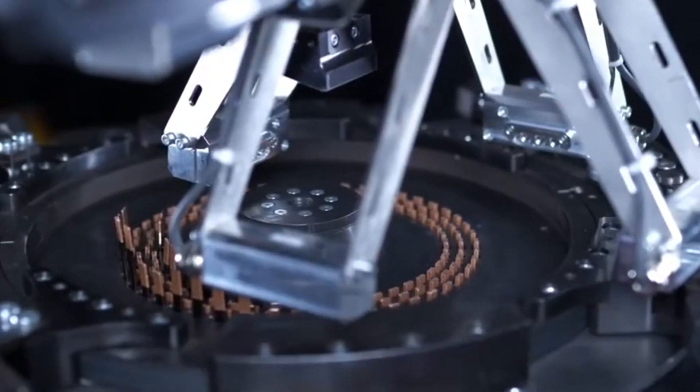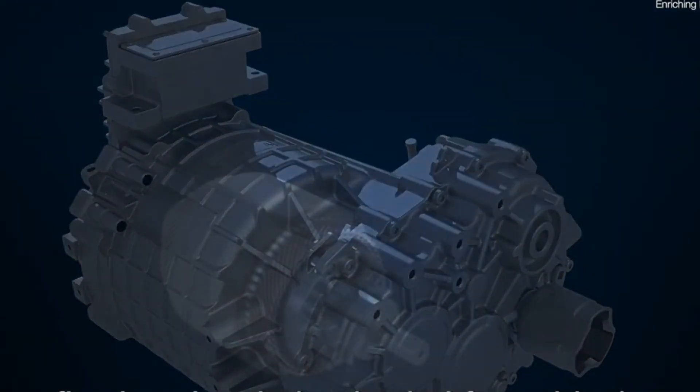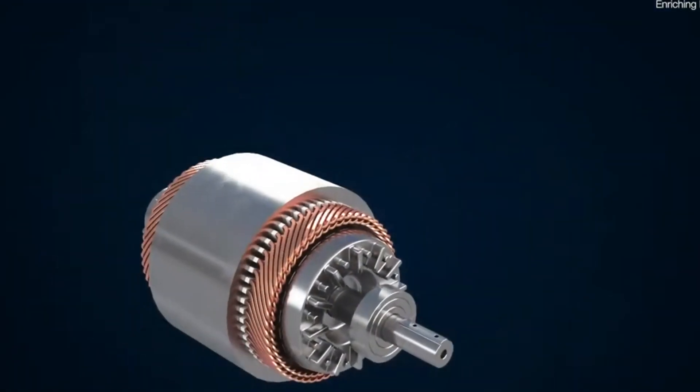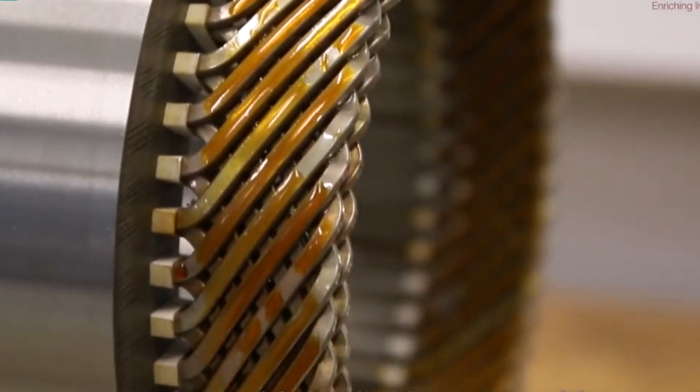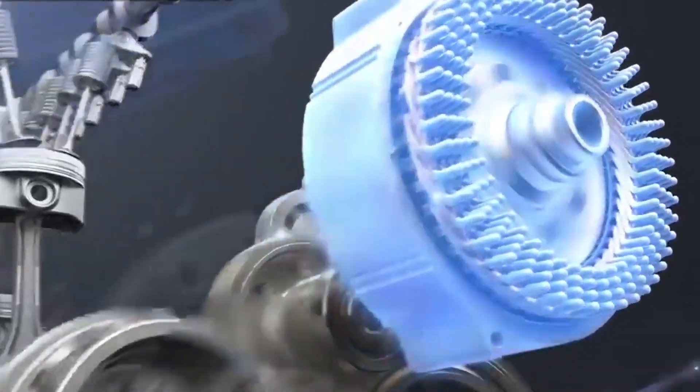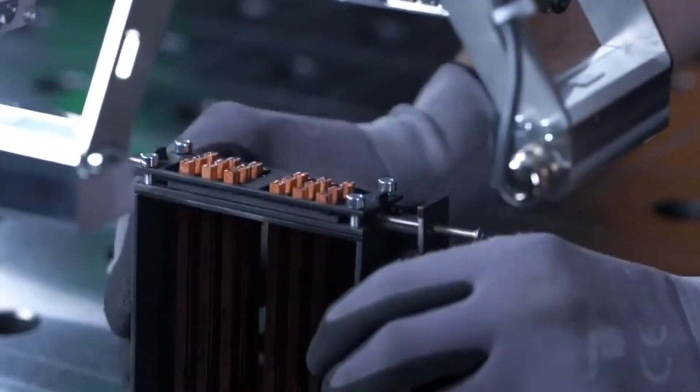Hairpin engine technology also provides better thermal control compared to conventional round wire motors. This is due to the larger contact area between the flat wires, which reduces internal voids and improves heat conduction and dissipation. As a result, the temperature rise in hairpin motors is typically ten percent lower than that of conventional round wire motors of the same design, according to temperature field simulations.